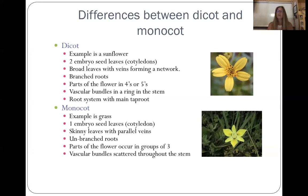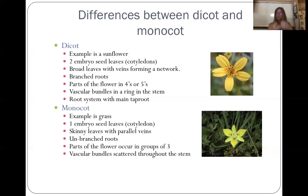If you were to cut the stem in half, its vascular bundles — its xylem and phloem — are going to be in rings around a central core. And it's going to have a main taproot: one thick root that goes down deep with branching roots coming off of it.